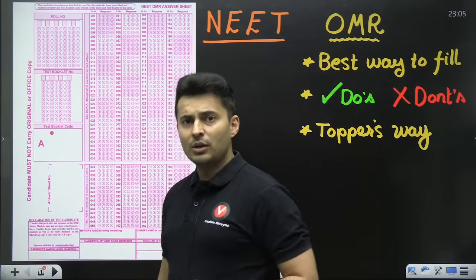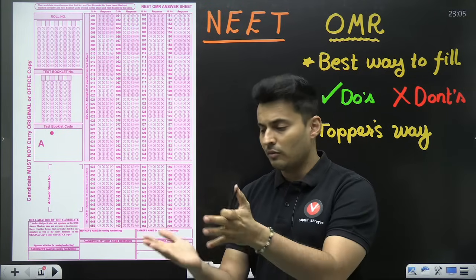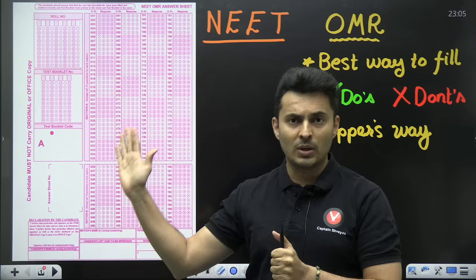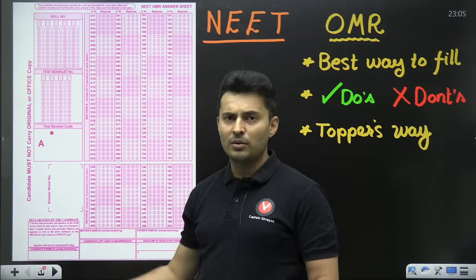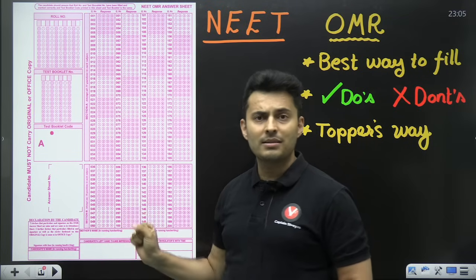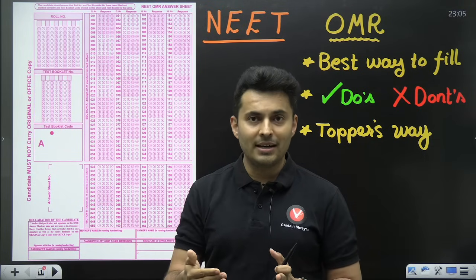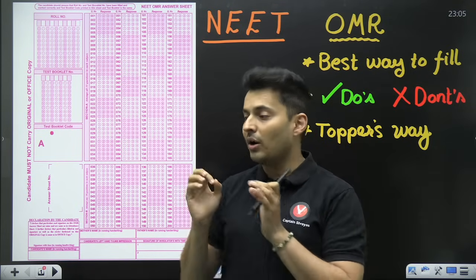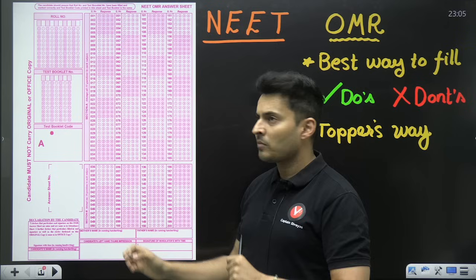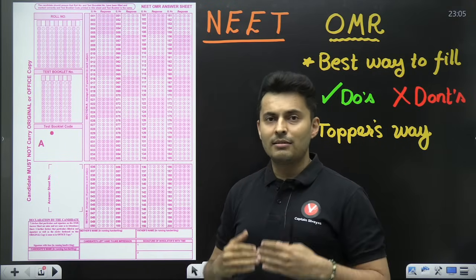The first thing that you will do as soon as you get the OMR sheet and the question paper booklet and you have not yet opened it, the bell has not yet rung, is you want to fill your roll number and other details, your signature, name, whatever those things are, and complete it in that duration. Do not hurry it up, do not make mistakes because you are not going to get a second chance or a second OMR sheet. So take your time, fill it coolly and relax yourself.